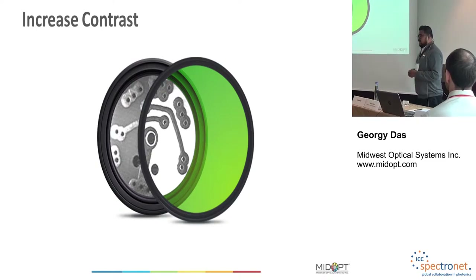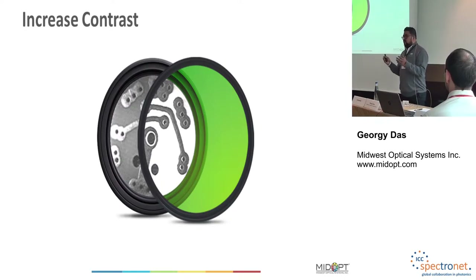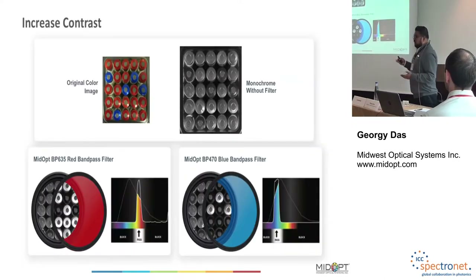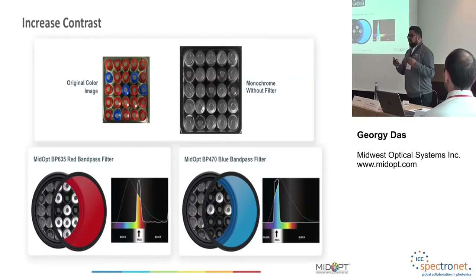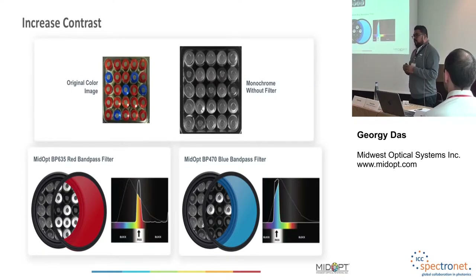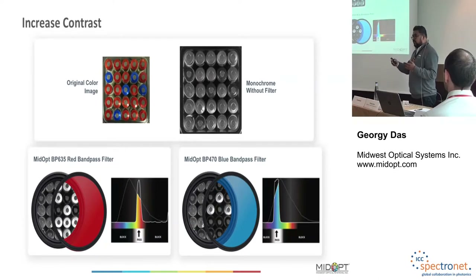If you have any questions about something, please let me know or visit our booth downstairs. Filters help to increase contrast, resolution, and repeatability. In machine vision applications you're trying to create some kind of contrast — trying to separate two different colors, or separate a part from the background, or some writing on the actual part itself — so the system can read that part.